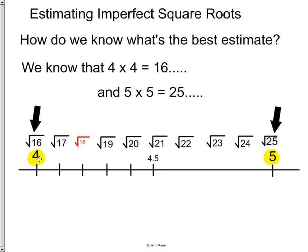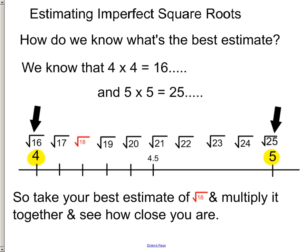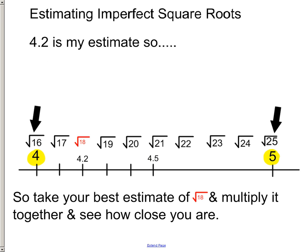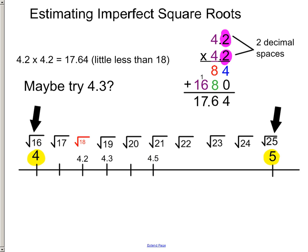We know 4 times 4 equals 16. And it's this idea of taking this number off the number line and times it by itself to see if it equals that square root. I know that 5 times 5 equals 25. So, I take my best guess, and I'm going to multiply it by itself and see how close it is to 18. So, my best estimate is 4.2. So, I'm going to take 4.2 and I'm going to multiply it by itself. I know that 4.2 times 4.2 is 17.64 or 17 64 hundredths. That's a little less than 18.